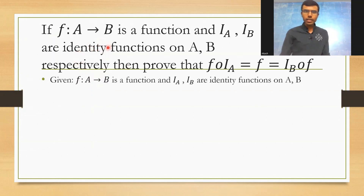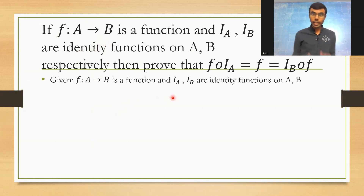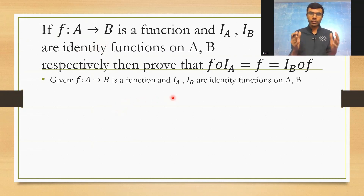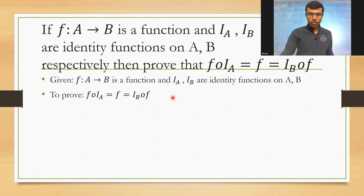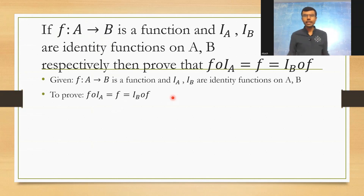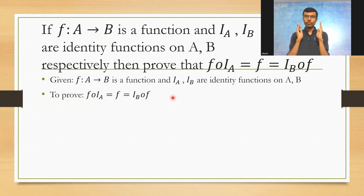Here we are given that f maps A to B is a function, and iₐ, i_b are identity functions on capital A and capital B. What I need to prove is that f∘iₐ is equal to f, which is equal to i_b∘f. My proof is going to be in two parts.